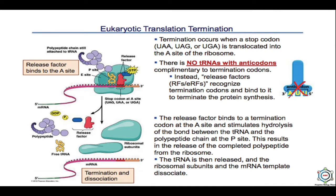In eukaryotic translation termination, when a stop codon is translocated into the A site, there is no tRNA with an anticodon complementary to the termination codon. Instead, a releasing factor recognizes the termination codon and binds to it. The release factor stimulates hydrolysis of the bond between the tRNA and the polypeptide chain at the P site, resulting in release of the completed polypeptide. The tRNA is then released and the ribosomal subunits and mRNA template dissociate.